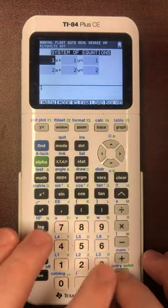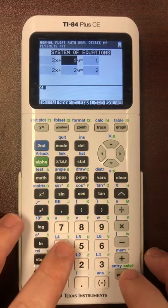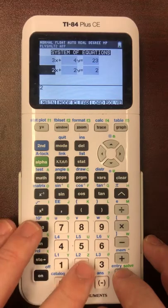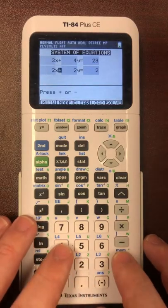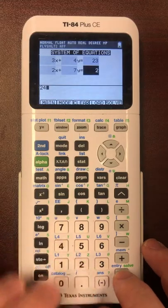Now we type in the equations: 3x plus enter, 4 enter, 23. 3x plus 4y equals 23. And next we hit 2 enter, plus enter, 7 enter, 24. Enter.